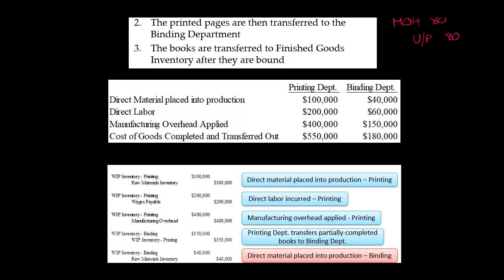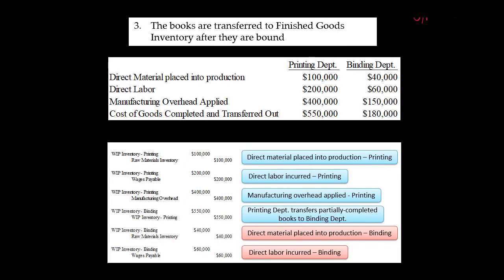The binding department also requisitioned some materials into production, so we credit raw materials inventory and debit work in process inventory for binding. Similarly, they also apply some direct labor — that $60,000 is debited to work in process inventory for binding. You would credit wages payable or cash if you've already paid.